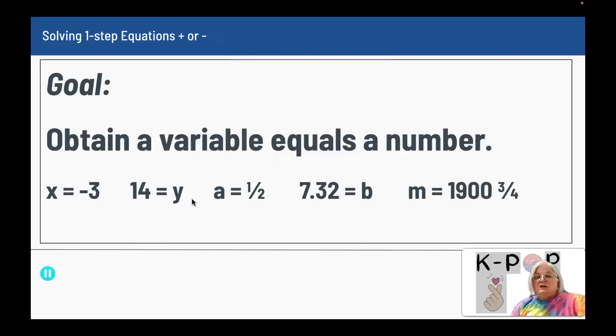Variable means unknown, so it answers your question. You put in the letter for the unknown, and then when you solve for it, you have your question answered. So the variable equals a number - that's what you want to get.